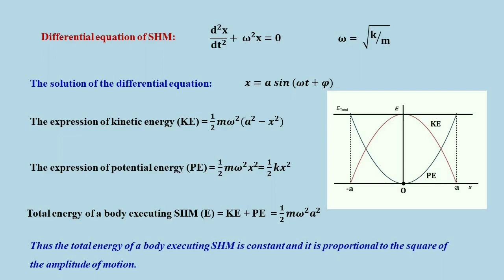At x equals plus or minus a, the kinetic energy is 0, and at x equals 0, that is at the equilibrium position, the kinetic energy is maximum: ½mω²a². The expression for potential energy is ½mω²x², and using ω equals root(k/m), we can also write it as ½kx². Plotted with respect to x, it is 0 at the equilibrium position and maximum at the amplitude positions, plus or minus a. The blue line in the graph represents the potential energy of the system executing simple harmonic motion.